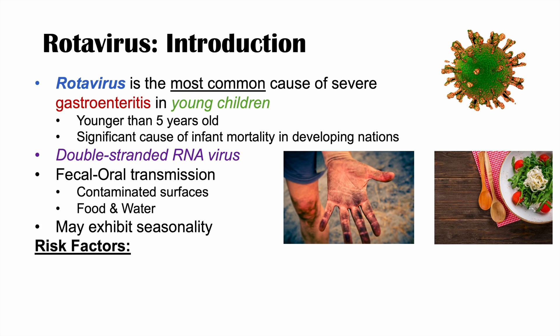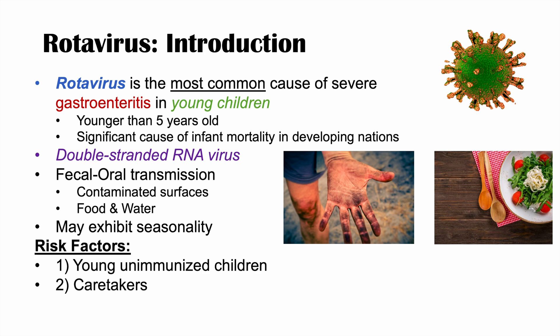What are some of the risk factors for getting infected with rotavirus? The first one is being a young, unimmunized child. The second is caretakers — anybody taking care of young children or the elderly population is more at risk. And the third risk factor is being immunocompromised. If your immune system is compromised or suppressed for any reason, it increases your risk for a variety of infections, including rotavirus.